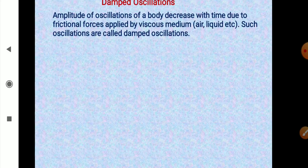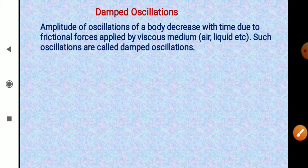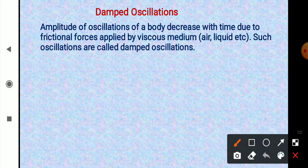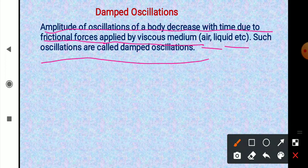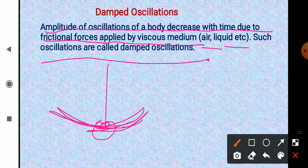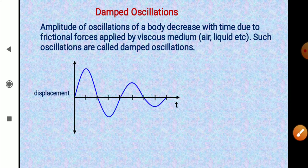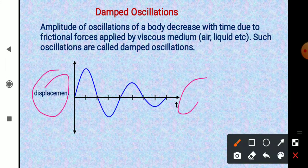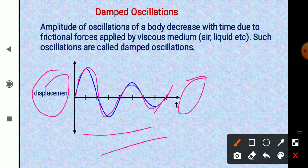Damped oscillations: when a body oscillates in a viscous medium like air or liquid, friction causes the amplitude of oscillation to decrease with time and eventually the body stops. Such oscillations are called damped oscillations. On a displacement-time graph, the amplitude gradually decreases until motion ceases. This happens because energy is dissipated due to friction.